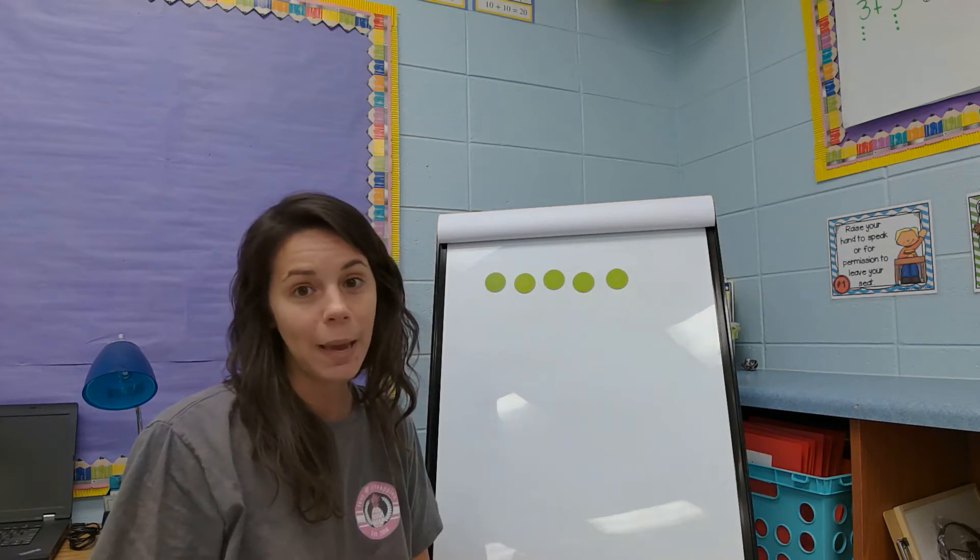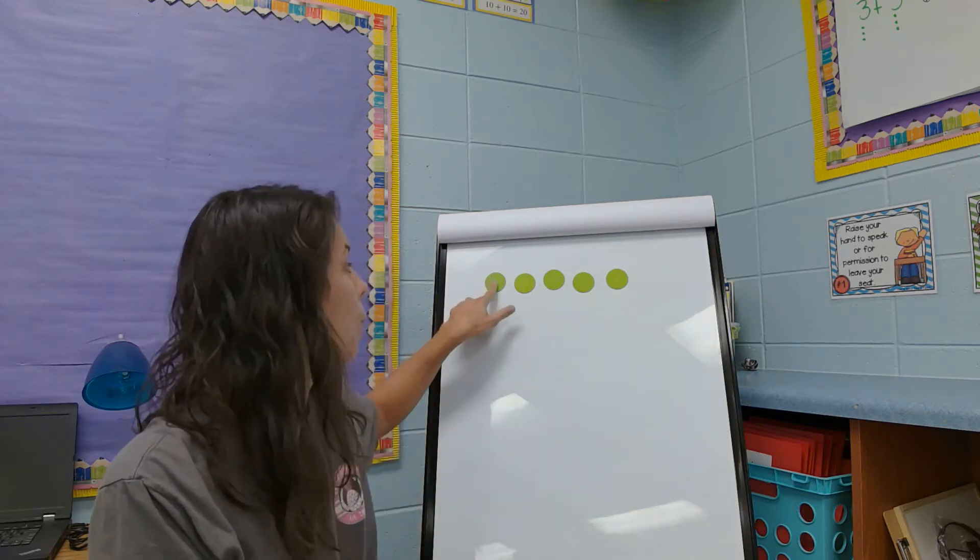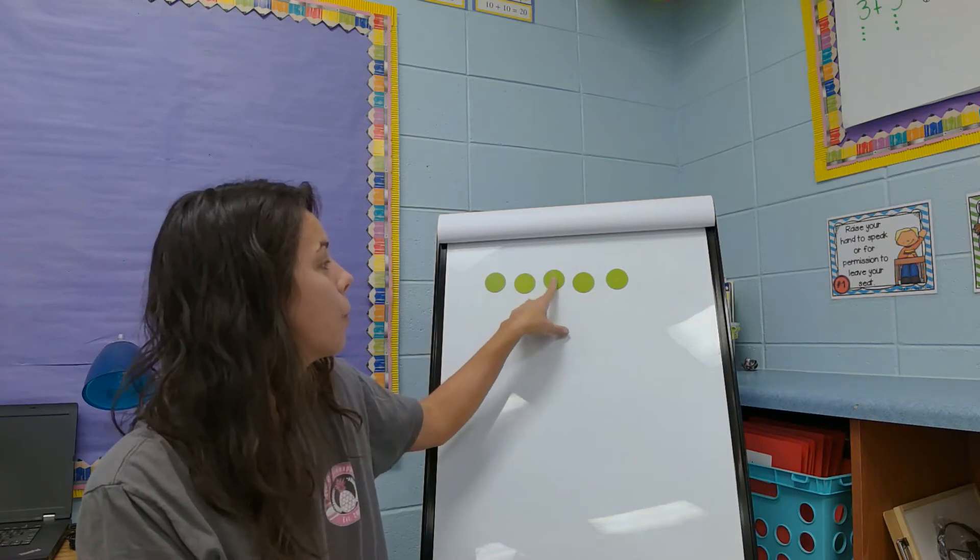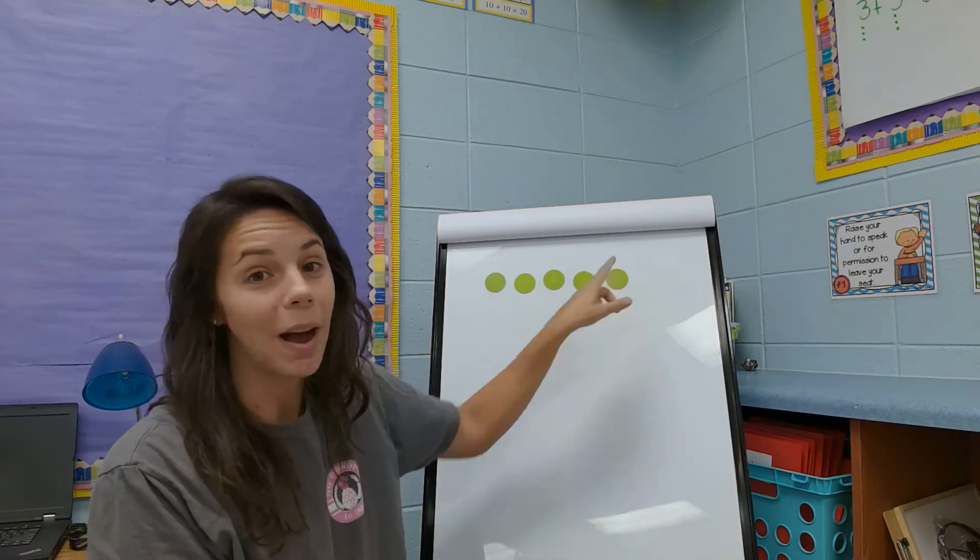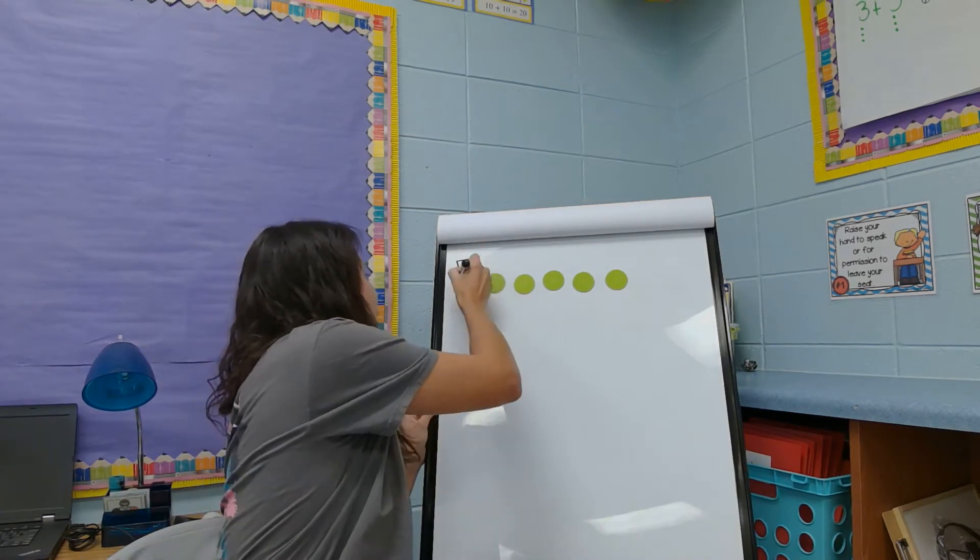All right, let's look at how many dots we have. Count them with me. One, two, three, four, five. We have five dots.